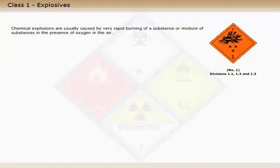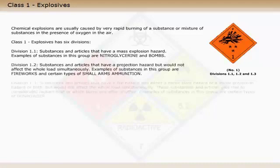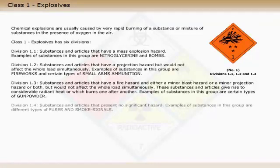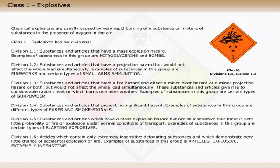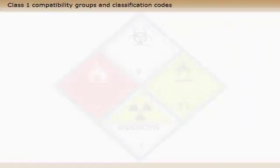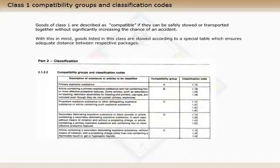Chemical explosions are usually caused by very rapid burning of a substance or mixture of substances in the presence of oxygen in the air. Class 1, Explosives has six divisions. Goods of class 1 are described as compatible if they can be safely stowed or transported together without significantly increasing the chance of an accident. With this in mind, goods listed in this class are stowed according to a special table, which ensures adequate distance between respective packages.